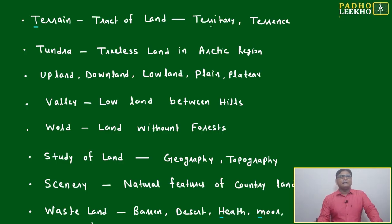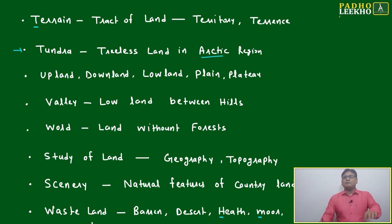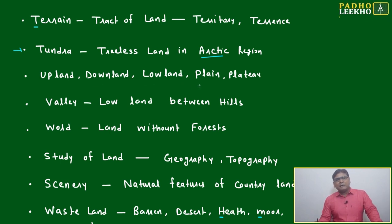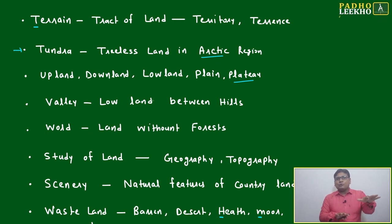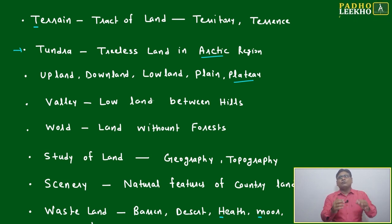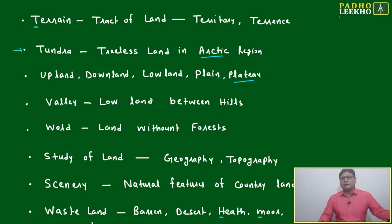Terrain means a tract of land or territory. Tundra is a special word referring to treeless land in the arctic region — it cannot be used anywhere else. Other land types include upland, downland, lowland, plain, and plateau. Plateau is between soil and mountain; mountain is the highest point or maximum projection on the earth's surface, while soil is the lowest projection other than water.